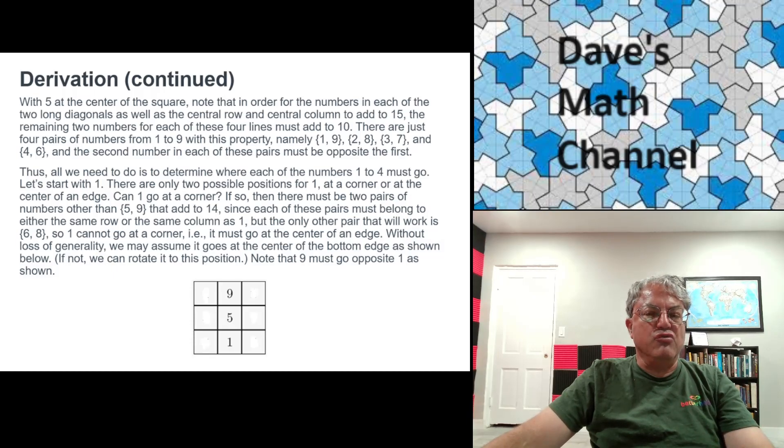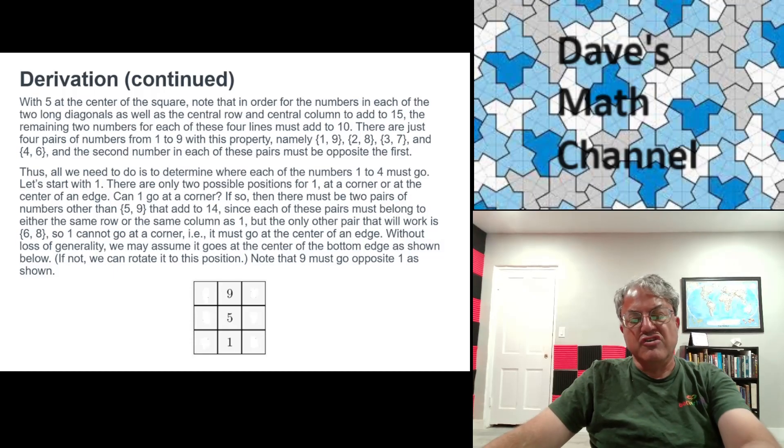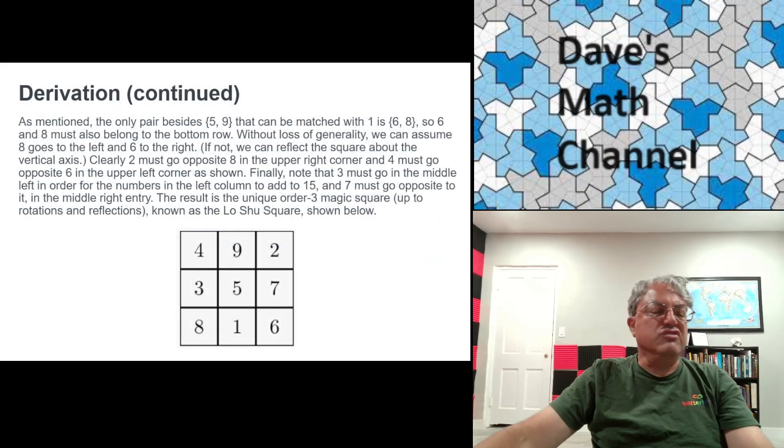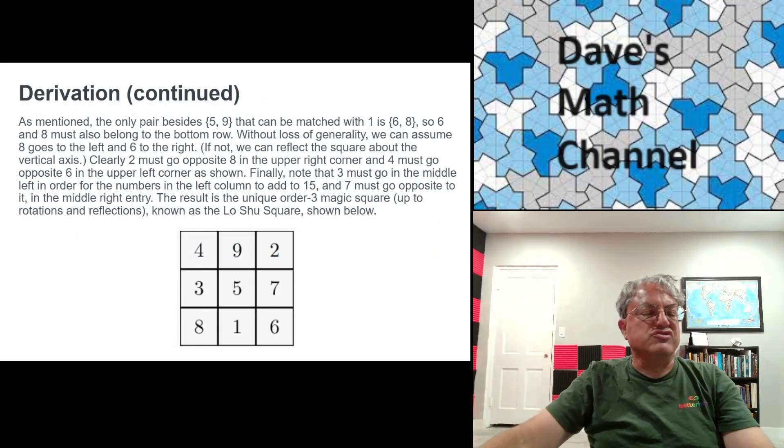And remember, another thing that's useful to know here: since 5 is in the center, that means that once we know where one of the numbers 1 through 4 goes, we automatically know where its partner goes. Its partner is just 10 minus that number, because we know that besides 5, the pair of numbers has to add up to 10. So we know that 9 has to go opposite 1, as I've shown here. So we've done this part, and we're almost done now.